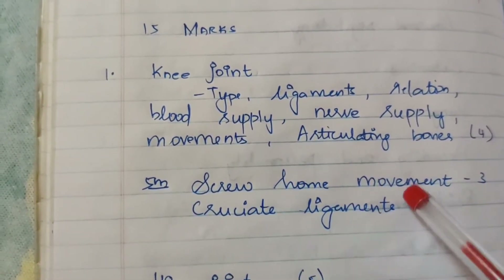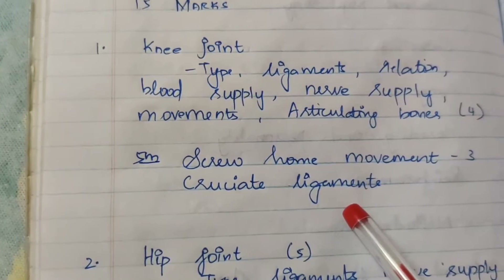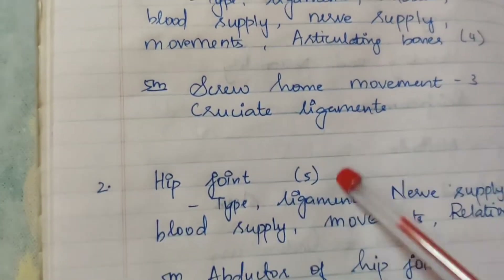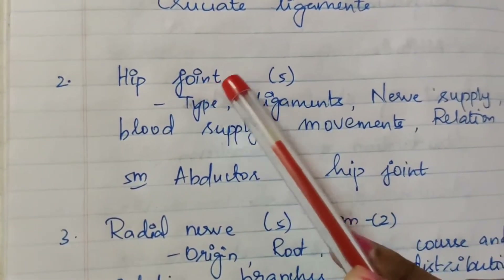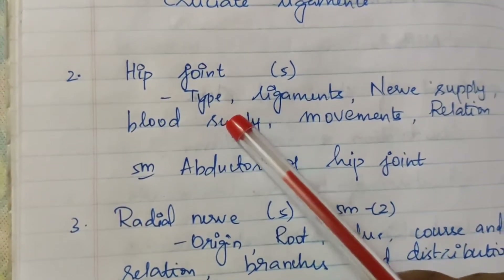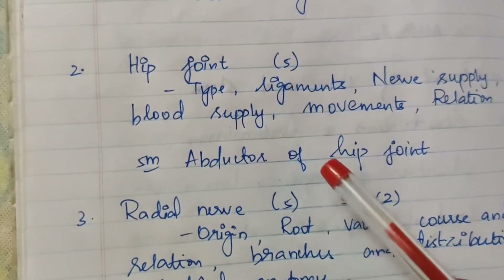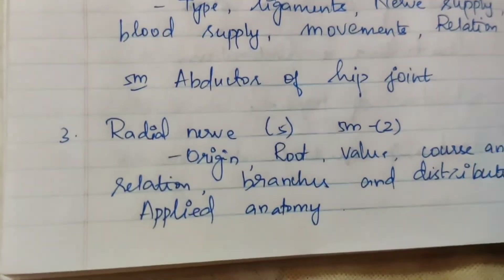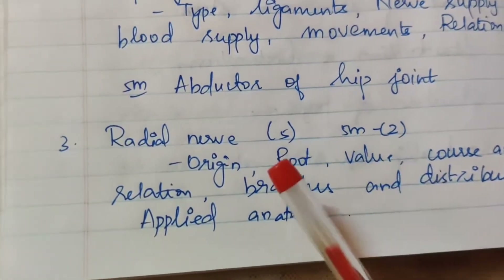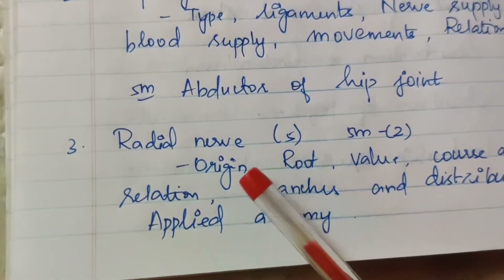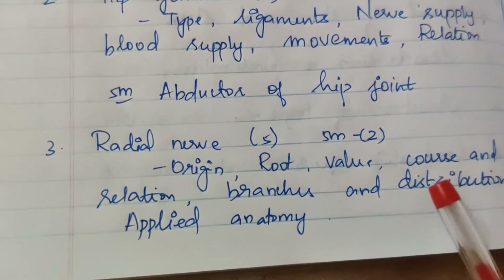There are two tips that might be covered. A guide for the hip joint — asked 3 times for 15 marks and 5 marks 2 times. For 15 marks, the headings include: origin, root values, course and relations, branches and distribution, and applied anatomy.